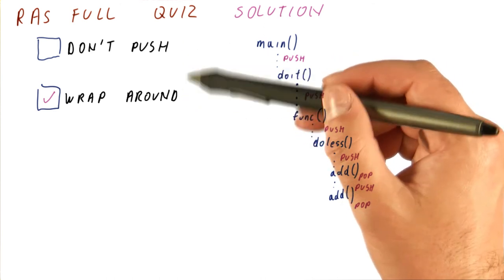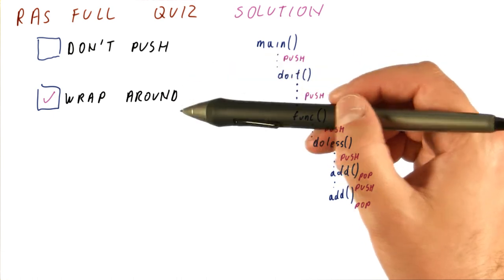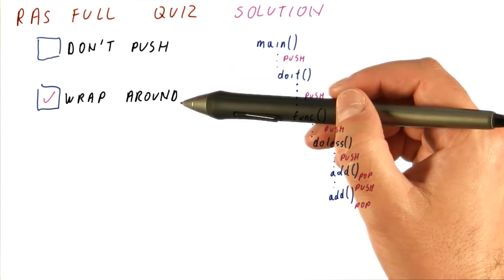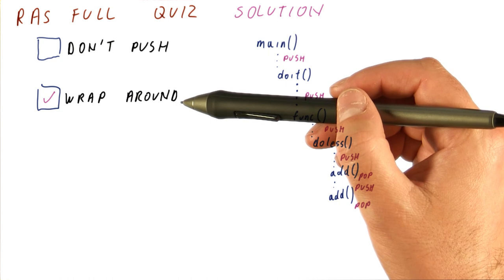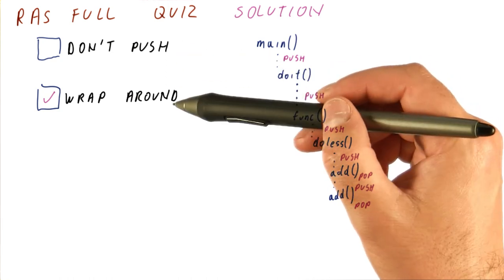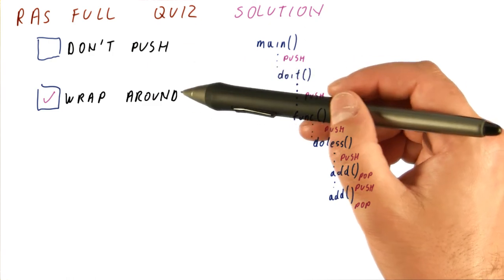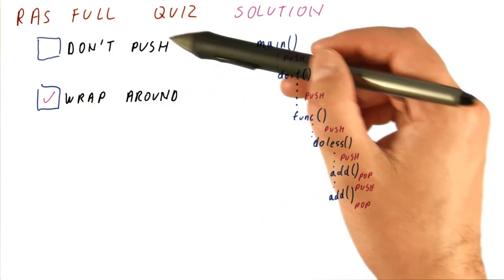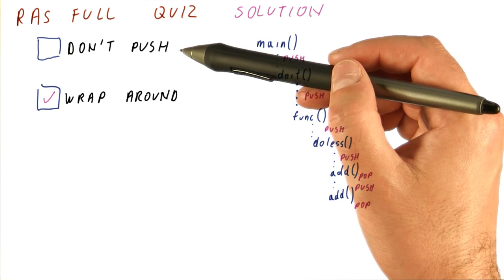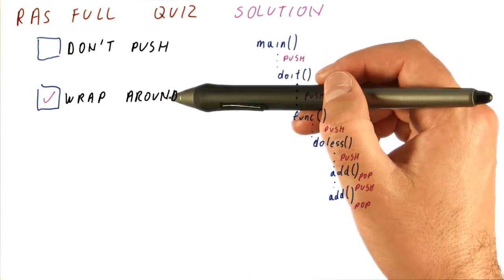So in the end, the discussion about what to do with the RAS has to do with achieving a larger number of correct predictions. But neither of these two ways can actually do things perfectly. We need to just choose which one gives us more correct predictions, and it turns out that the wrap around approach predicts better than the don't push approach, though both of them result in mispredictions anyway.